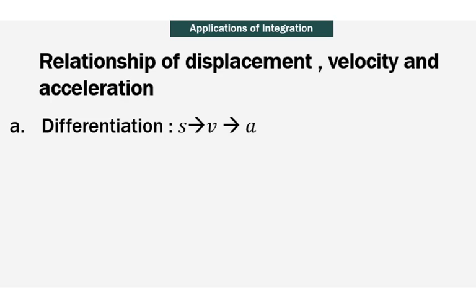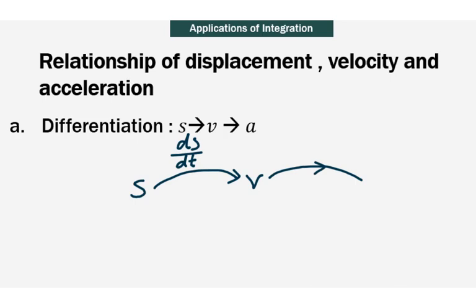In the last section about differentiation, we have learnt that when a particle moves in a straight line where the displacement from a fixed point O on the line is S, we can obtain the velocity and also the acceleration by differentiation. For instance, when you have the equation of S, to get the velocity equation, all you need to do is differentiate the equation of S with respect to time. You will get velocity. Continue differentiation.